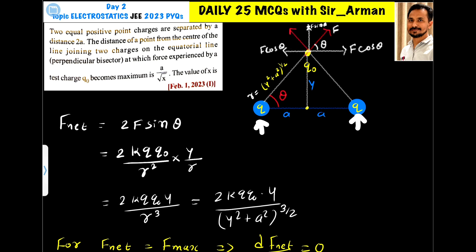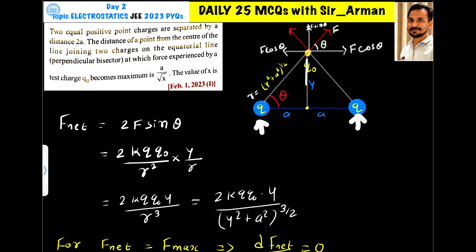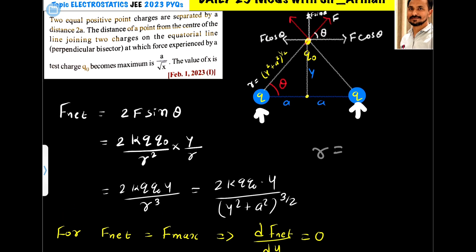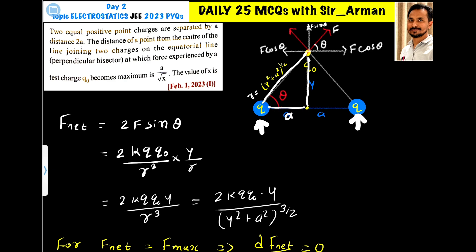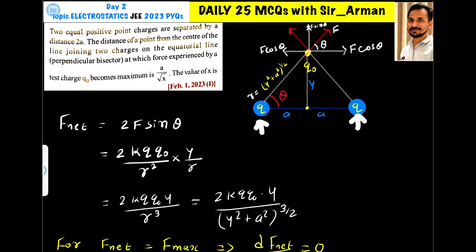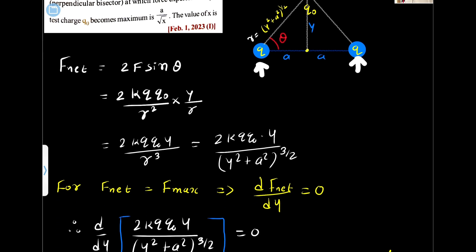The net force acting becomes 2f sine theta. So 2f is k q q naught divided by r squared. Since sine theta equals y divided by r (opposite over hypotenuse), the net force becomes 2k q q naught y divided by r cubed. Using the Pythagorean theorem, r equals the square root of y squared plus a squared, so r cubed equals (y squared plus a squared) raised to the power 3/2.